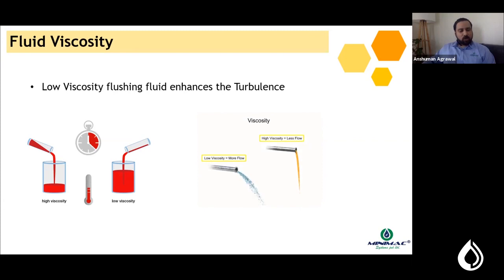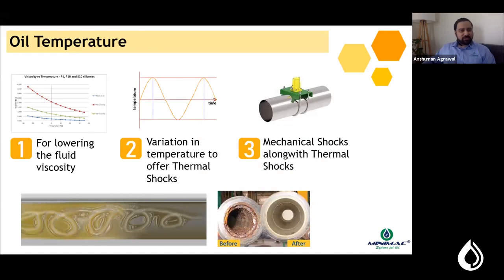The second cornerstone, fluid viscosity: lower oil viscosity provides better turbulence, as established in the Reynolds number formula. Oil temperature has three impacts on flushing efficiency: first, it temporarily reduces fluid viscosity, improving flow efficiency and Reynolds number. Second, thermal shocks are required to loosen debris sticking to the internals of pipelines.